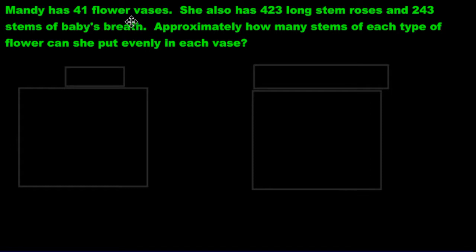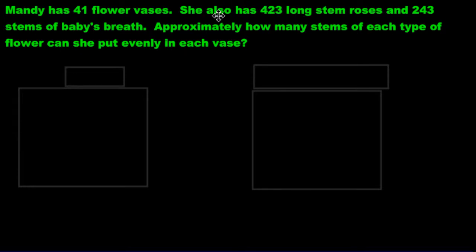Question two. Mandy has 41 flower vases. She also has 423 long stem roses and 243 stems of baby's breath — that's a kind of flower. Approximately how many stems of each type of flower can she put evenly in each vase? Think about this: is this going to be a division question, multiplication, addition, or subtraction? She has these flower vases and wants to split the flowers among the vases — it's division.